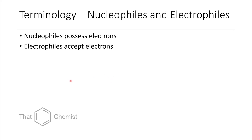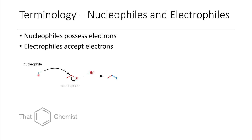Let's talk a little about terminology. A nucleophile is something with electrons — it possesses electrons and is usually willing to donate them. If it isn't willing to donate them, it would be a poor nucleophile. An electrophile is something that either has a positive charge or is willing to accept electrons. In the example we just looked at, iodide would be our nucleophile and bromoethane would be our electrophile. We also have the electrophilic center — the center being attacked by the nucleophile — and the leaving group, also called the nucleofuge. Most of the time people just call it a leaving group.